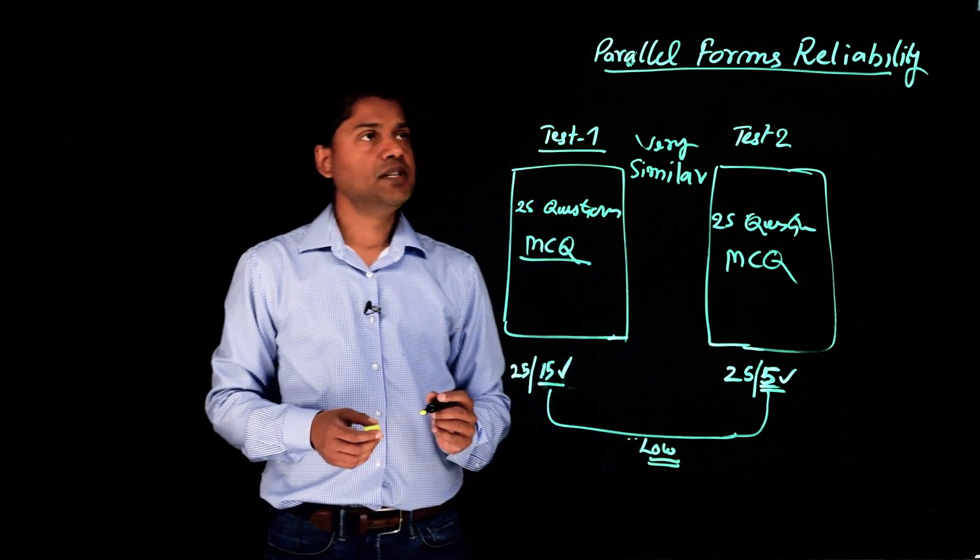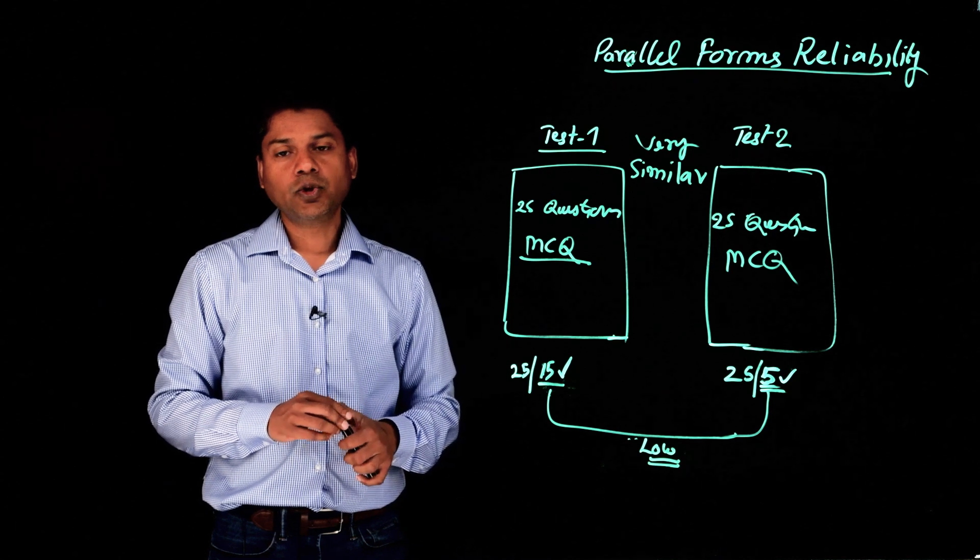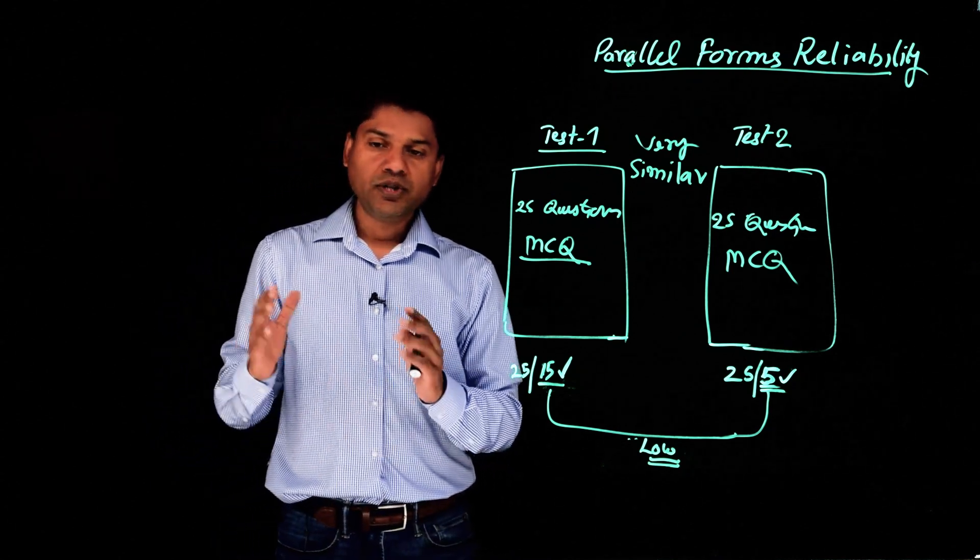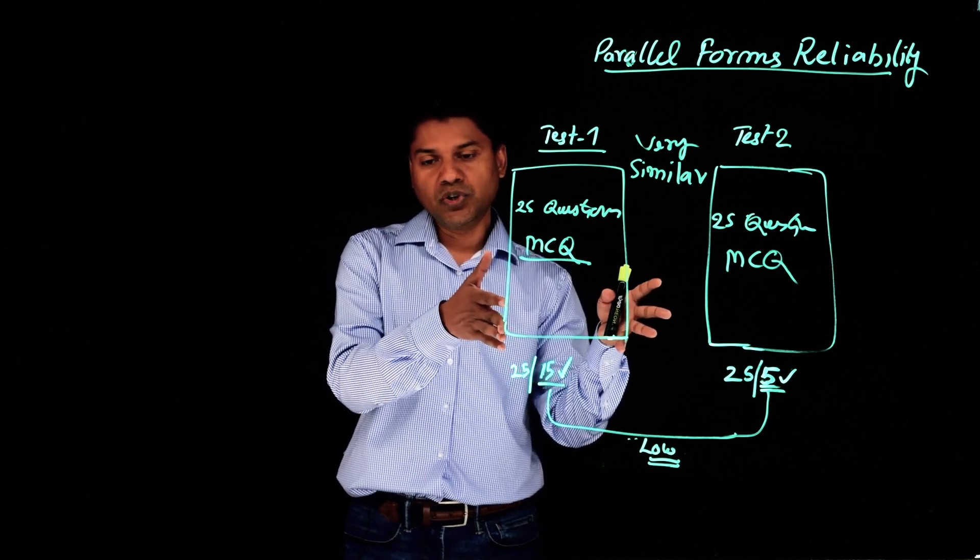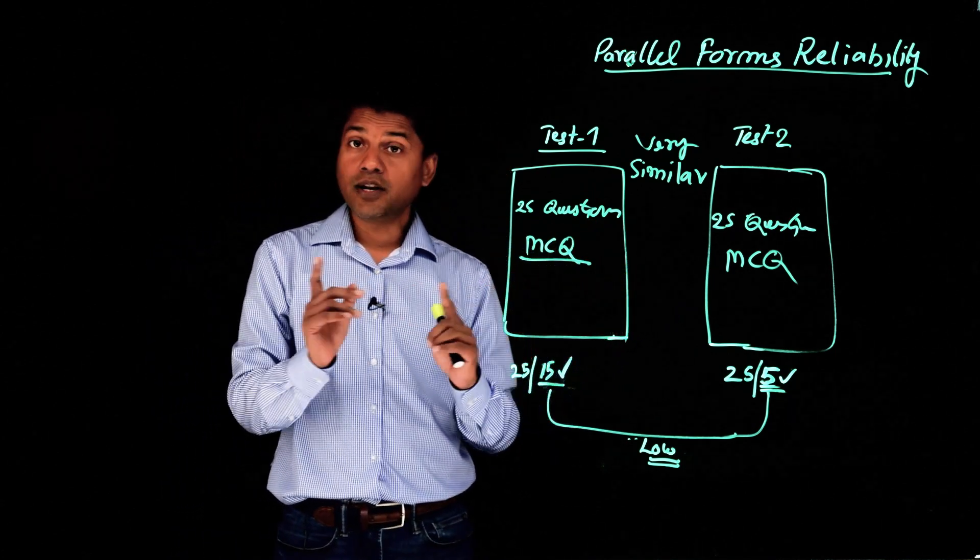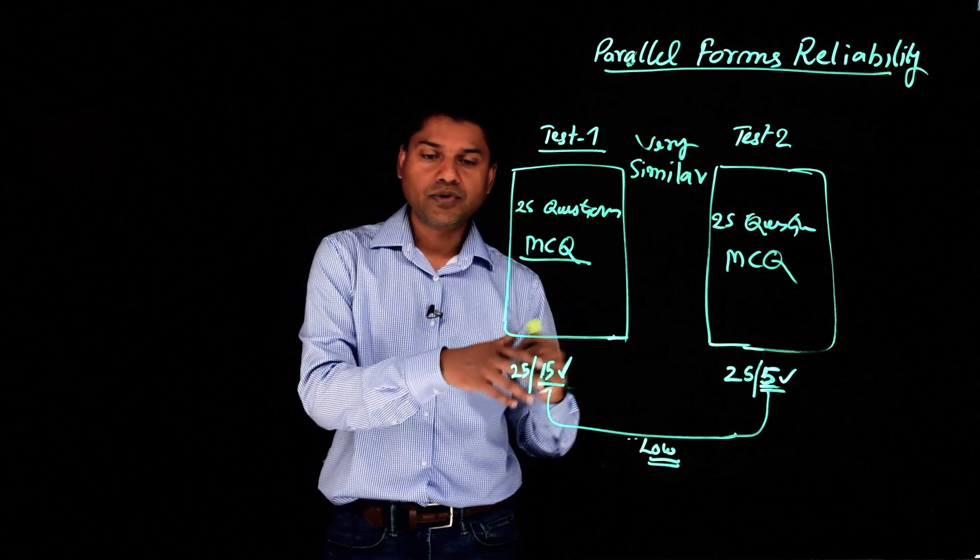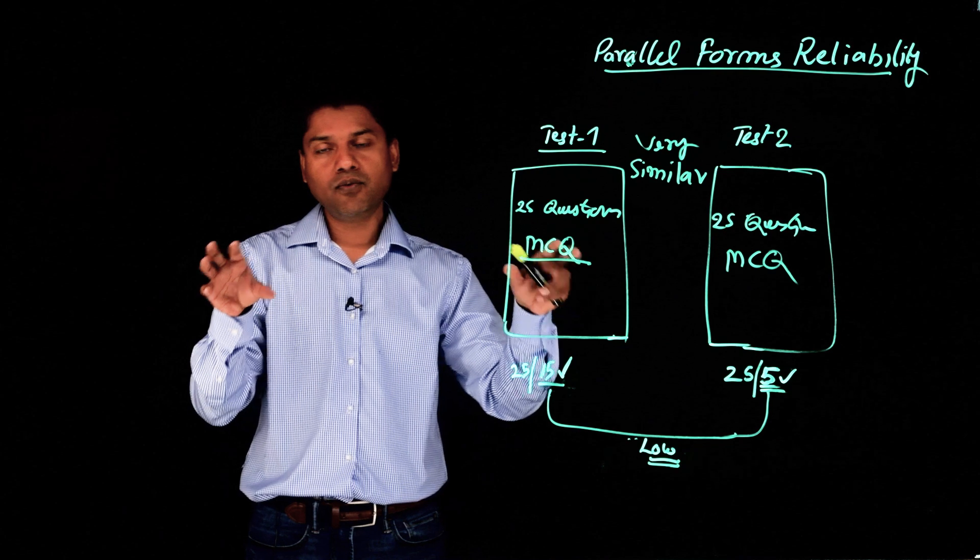So this is, we call it parallel forms reliability. So in parallel forms, what we do, we develop a test, and then we develop a parallel test, which has the same structure, similar type of question, not exact questions, but similar questions, similar number of questions. So they look very parallel from each other.